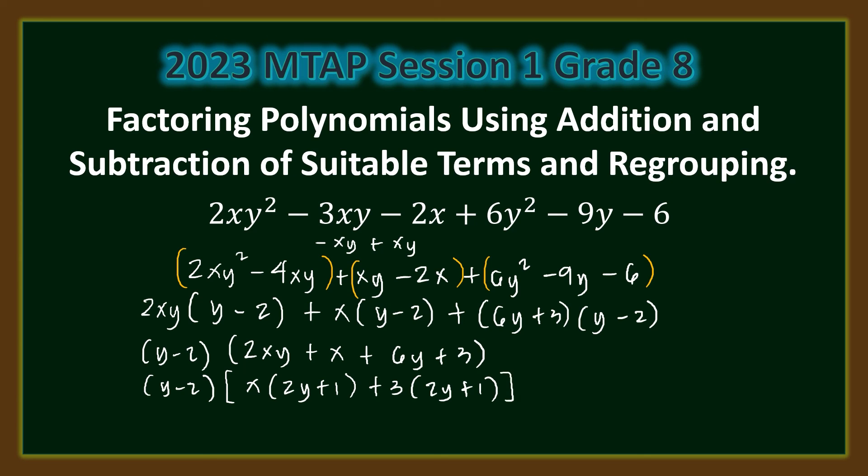We can now factor this completely: (y minus 2) times the common binomial factor (2y plus 1) times (x plus 3). This is the complete factorization.